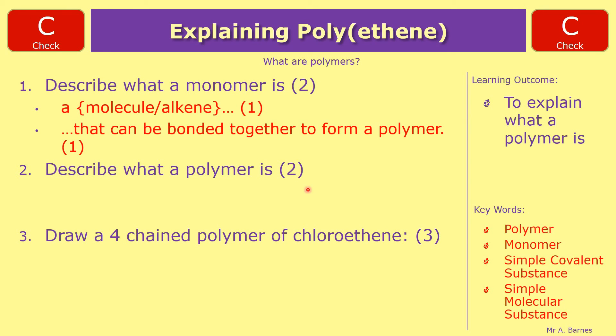The second mark describe what a polymer is. A chain of identical. You've got to get that keyword in there identical, because all of the monomers are the same. Monomers bonded together. So a chain of identical monomers bonded together will get you two marks.